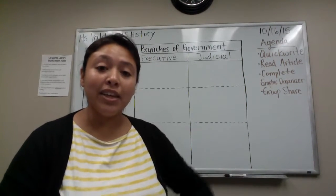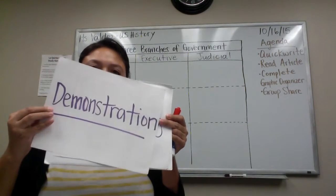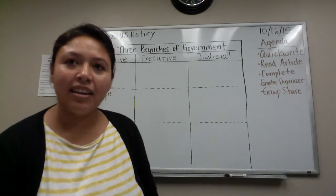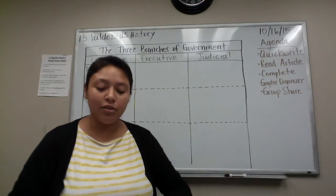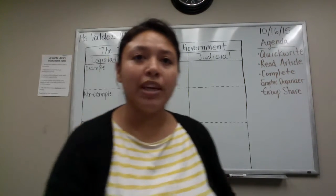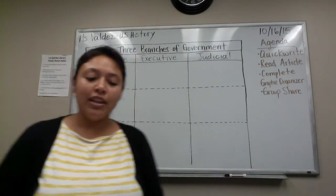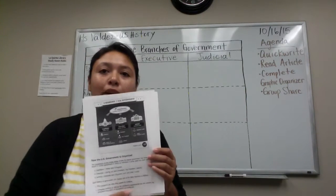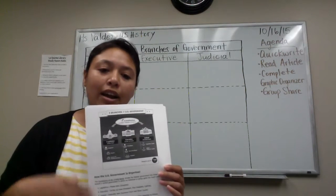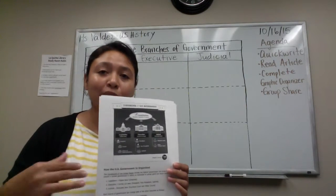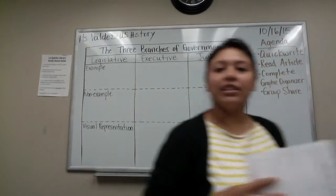So let's begin the demonstration. All right, now that we've finished our click right, let's put our notebooks away and let me pass out our article that we will be reading today. So everybody has their article. Today's article is on the three branches of government. Everybody has an article at their desk — either they're looking at it on the iPad or on paper — and we will be using a graphic organizer for this lesson.